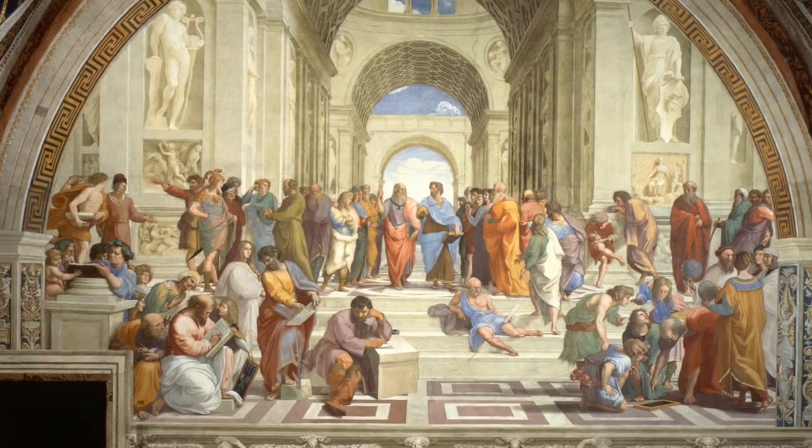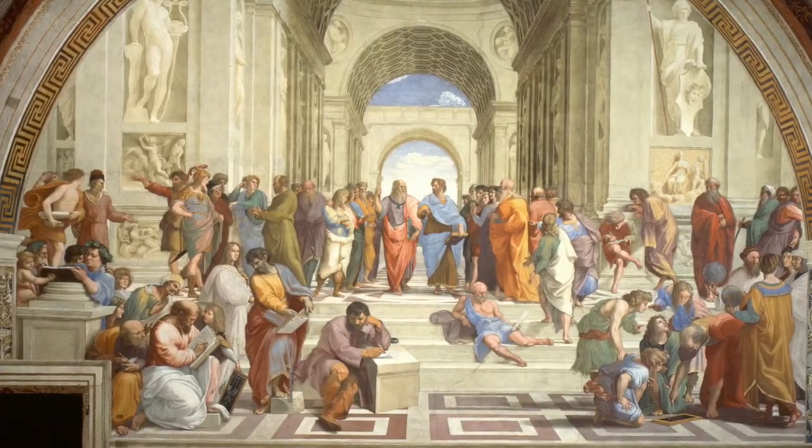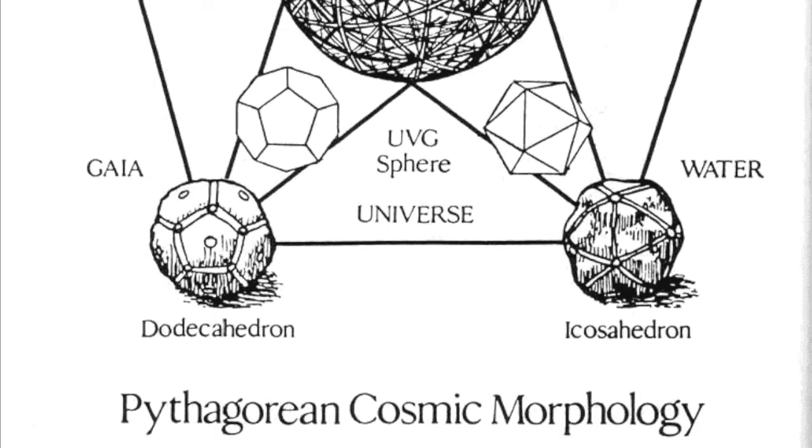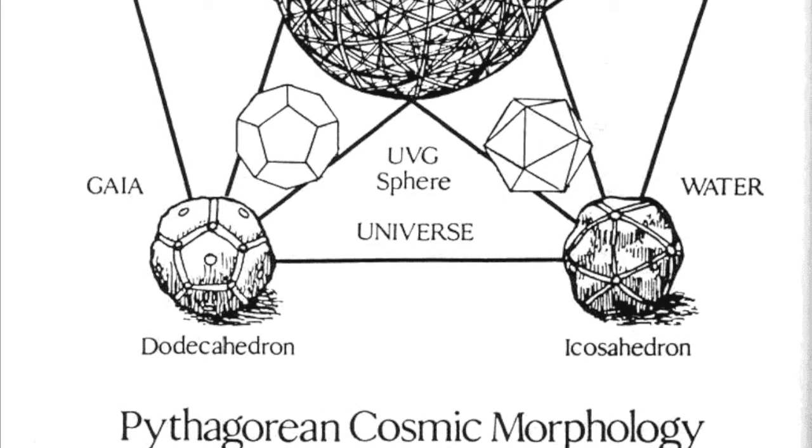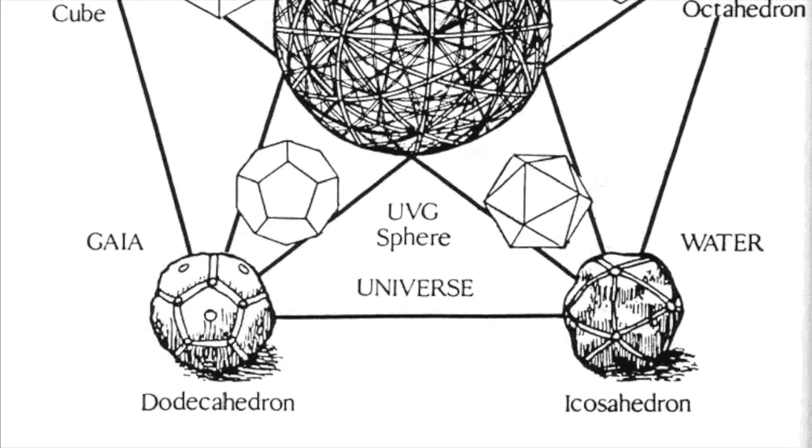Platonic solids are prominent in the philosophy of Plato, their namesake. He associated each of the four classical elements—earth, air, water, and fire—with a regular solid.